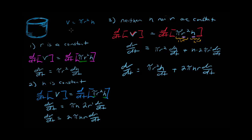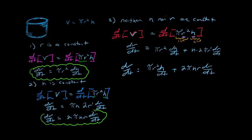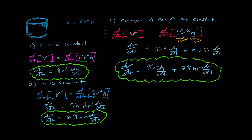Depending on whether r or h is constant determines what your related rates equation looks like. In Scenario 1, you have dV/dt and dh/dt — they'll give you one and you solve for the other. Likewise in Scenario 2, you have dV/dt and dr/dt. In Scenario 3, there are three rates: dV/dt, dh/dt, and dr/dt — so they would need to give you two of the three, or provide information to express one in terms of another.